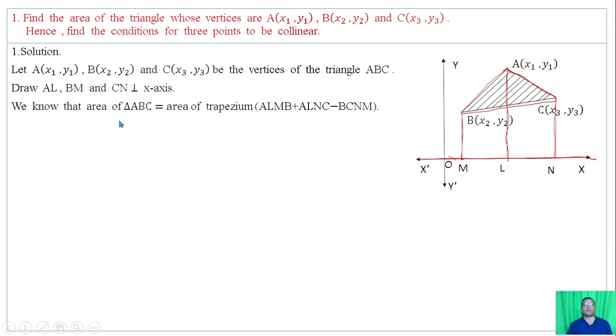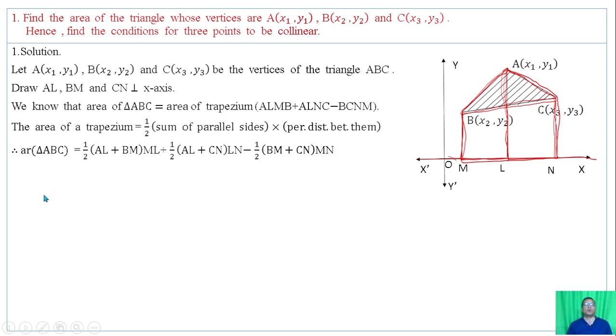We know that area of triangle ABC equals area of trapezium ALMB plus area of trapezium ALNC minus area of trapezium BCNM. The area of a trapezium is half sum of parallel sides times perpendicular distance between them.